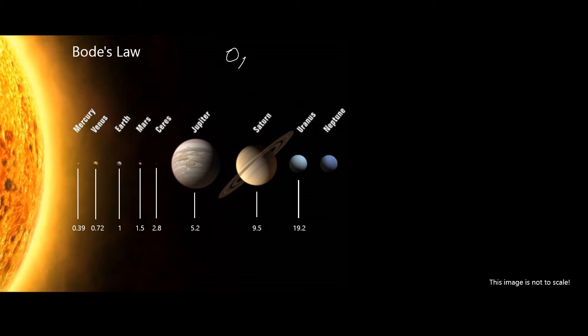Start with zero, three, and then double the numbers after that. So, 6, 12, 24, 48, 96, 192.